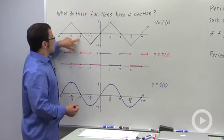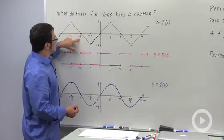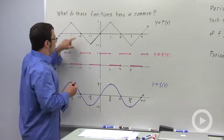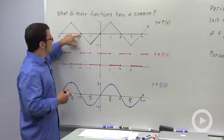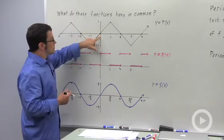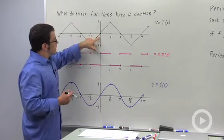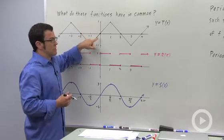Suppose I start with an x value of negative 2. What could I add to negative 2 and get exactly the same output, which is 0? I could add 2. That will give me 0. If I add 2 to negative 2, I get x equals 0, which has an output of 0.